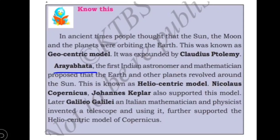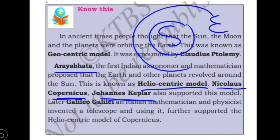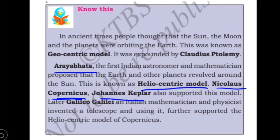Afterwards, Aryabhata from India — an astronomer and mathematician — proposed that the Earth and other planets revolve around the sun. This is known as the heliocentric model. Scientists Nicholas Copernicus and Johannes Kepler also supported this view, saying the sun is constant and the Earth and other planets revolve around it. Galileo Galilei, an Italian mathematician and physicist, invented the telescope — a device used to observe objects in space.